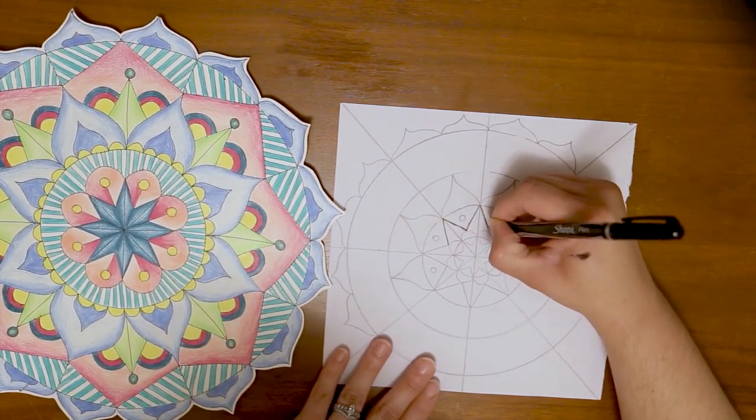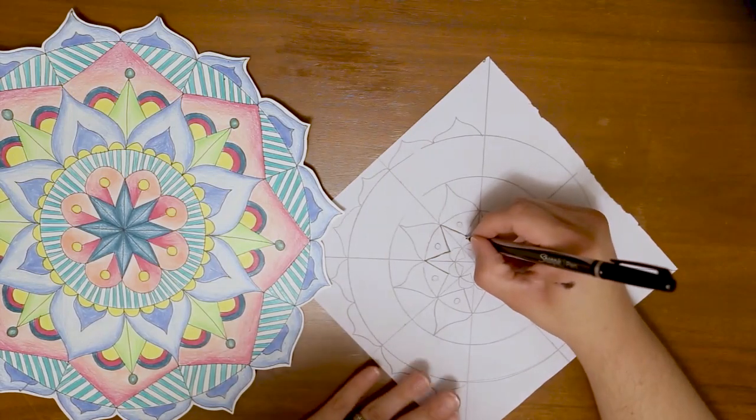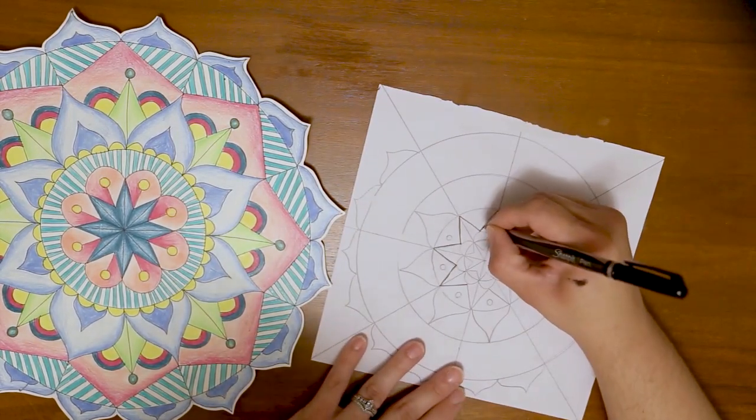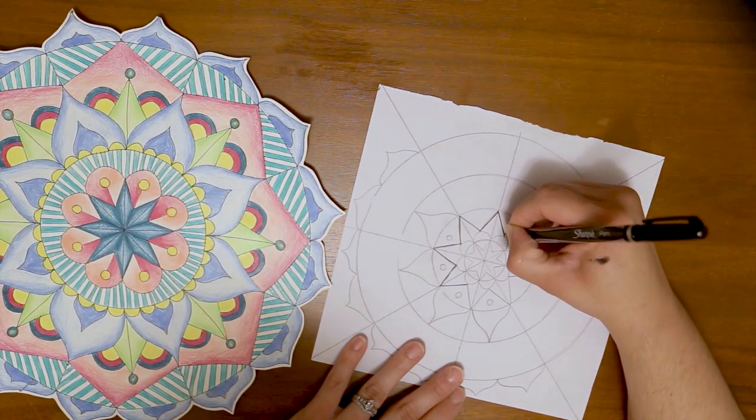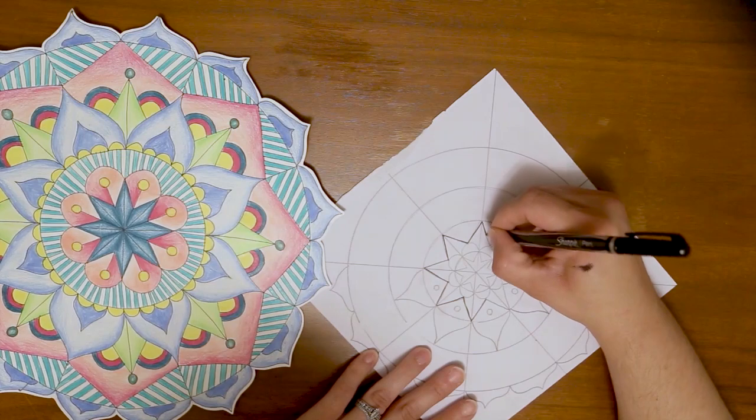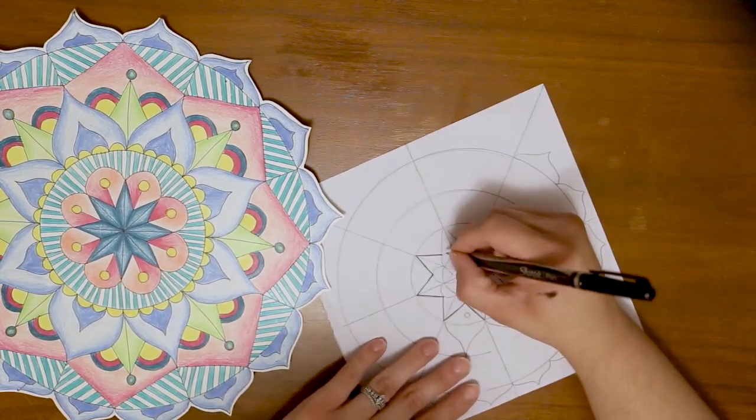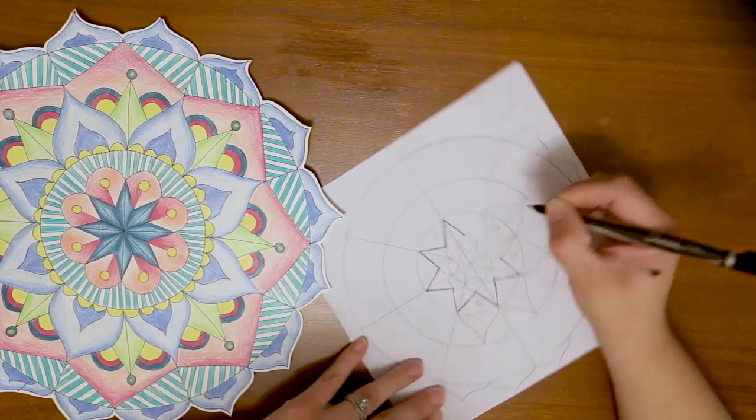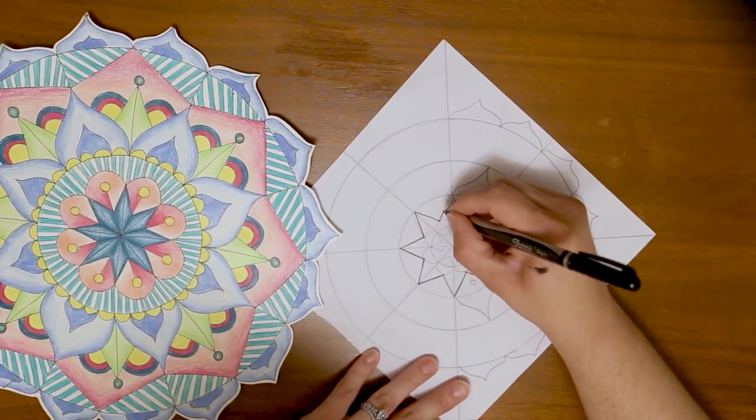After I'm all done tracing, I can take an eraser and I can erase over my entire mandala to get rid of those lines that I don't want. When I'm tracing, I want to make sure that I take my time. I want to make sure that I'm doing as nice and neat of a job as I was doing when I was drawing my mandala. Sometimes I do an even neater job when I'm tracing because I know that I can't erase the marker.